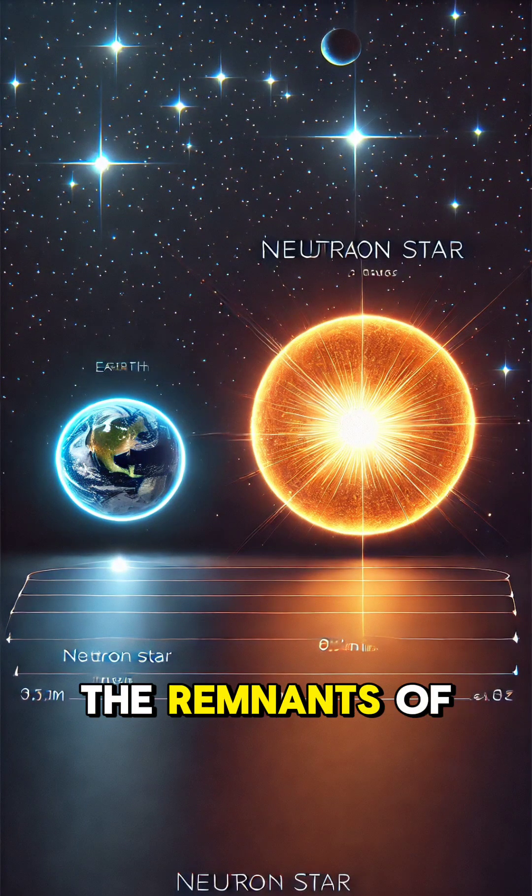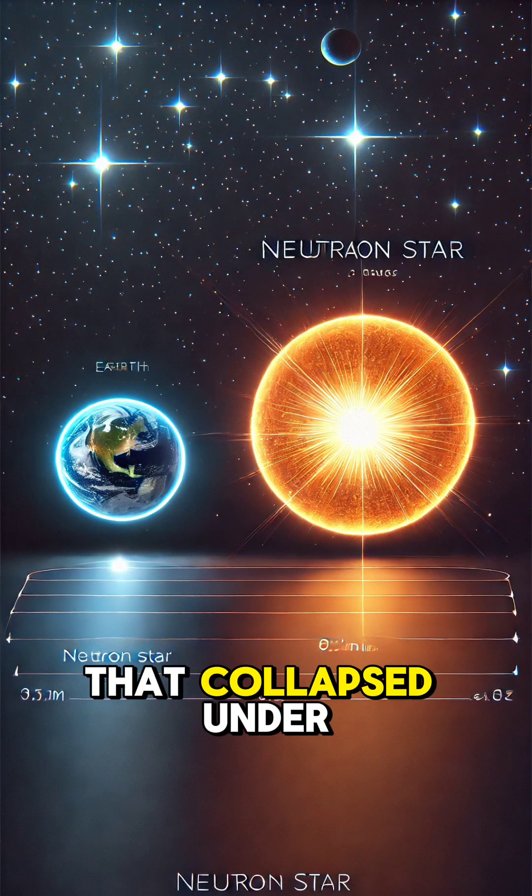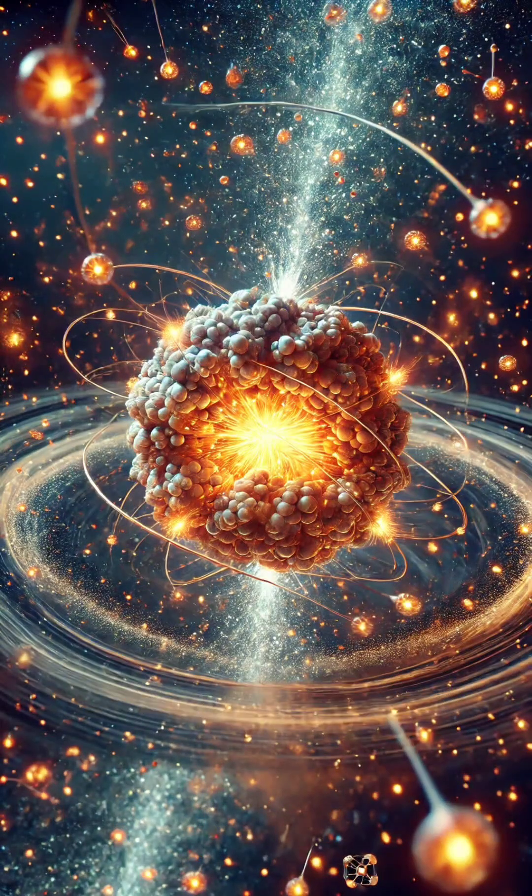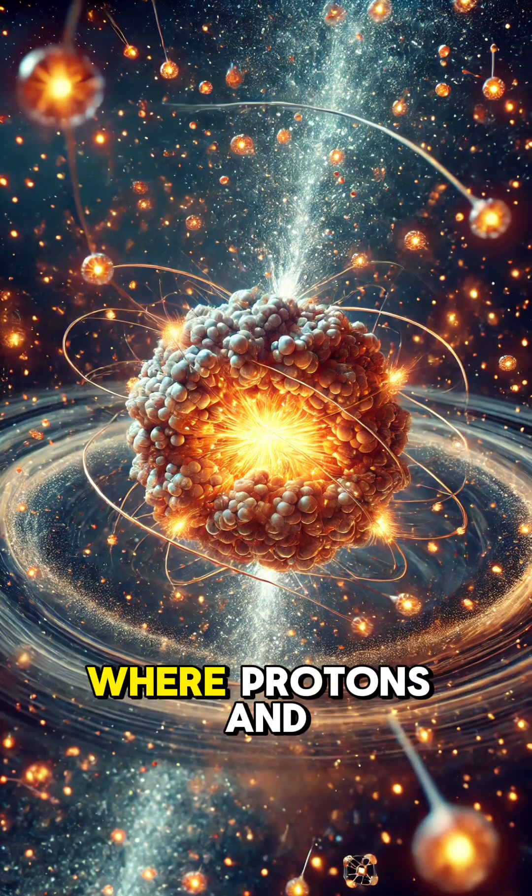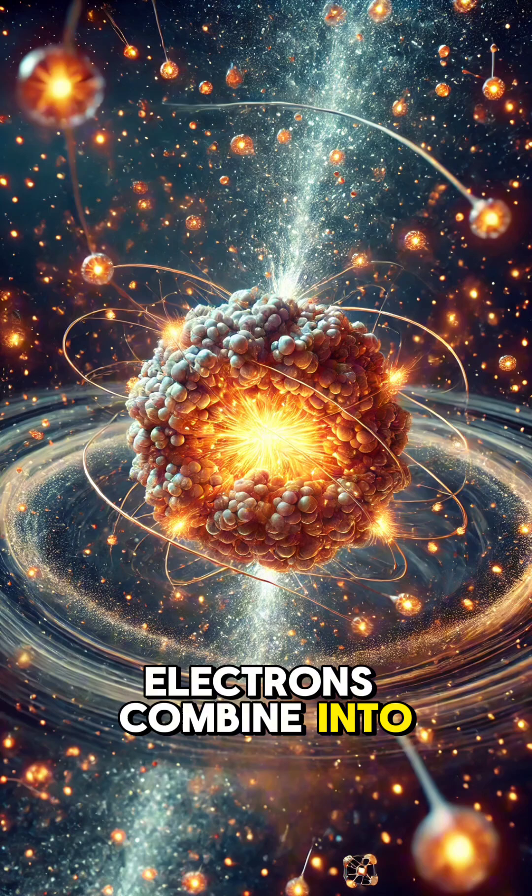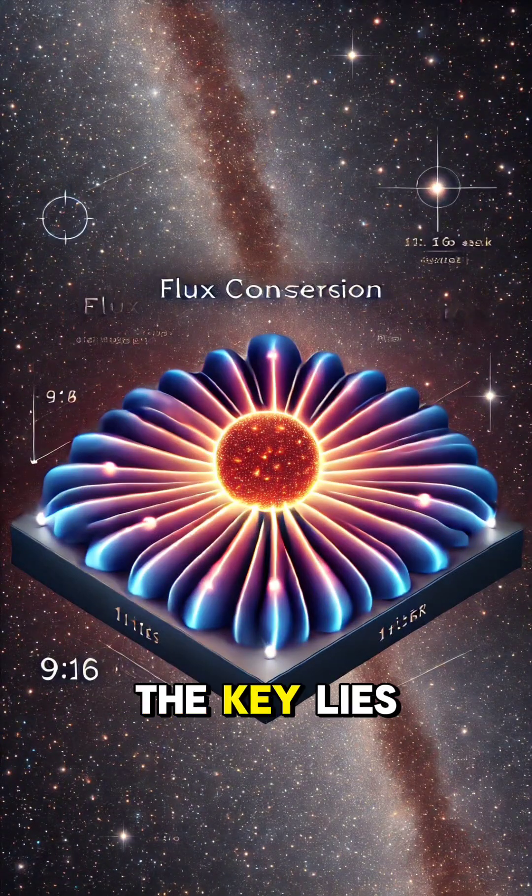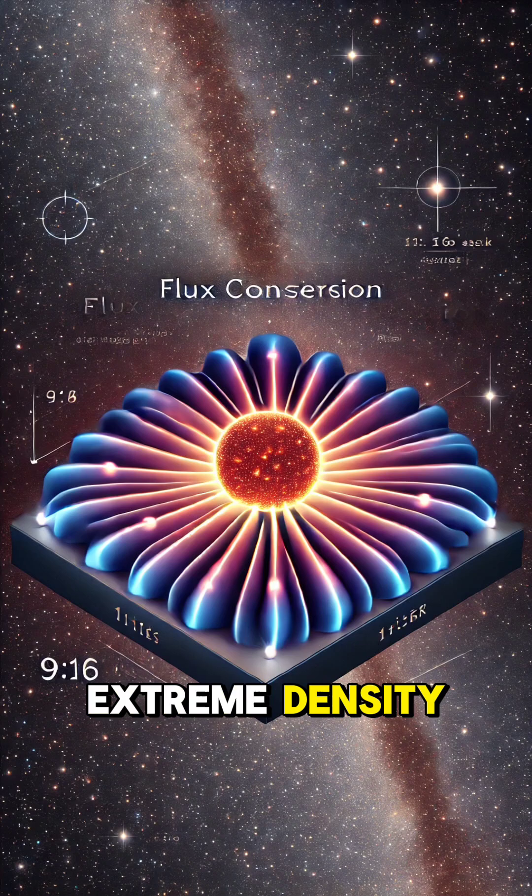Neutron stars are the remnants of massive stars that collapsed under their own gravity after a supernova explosion. Their cores are compressed to the point where protons and electrons combine into neutrons, forming a dense, spinning ball. The key lies in this rapid rotation and their extreme density.